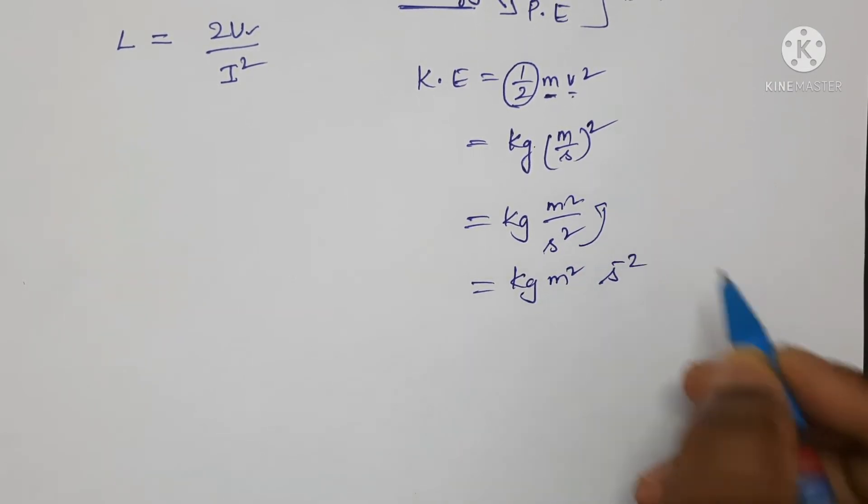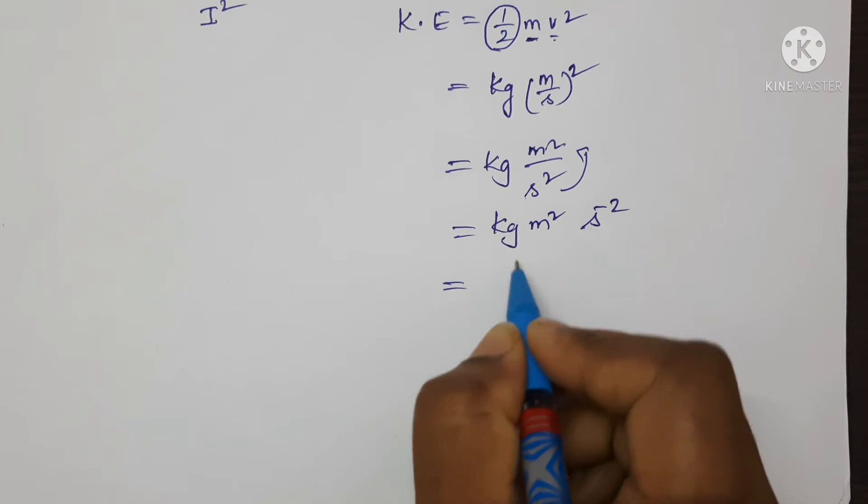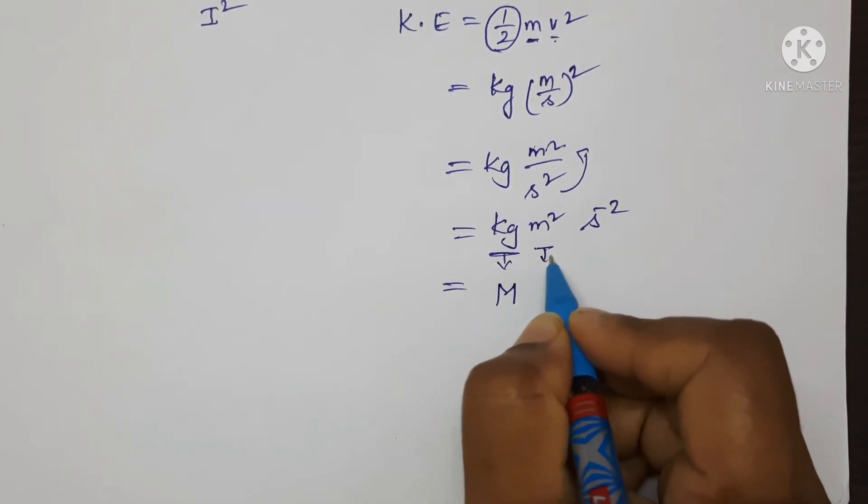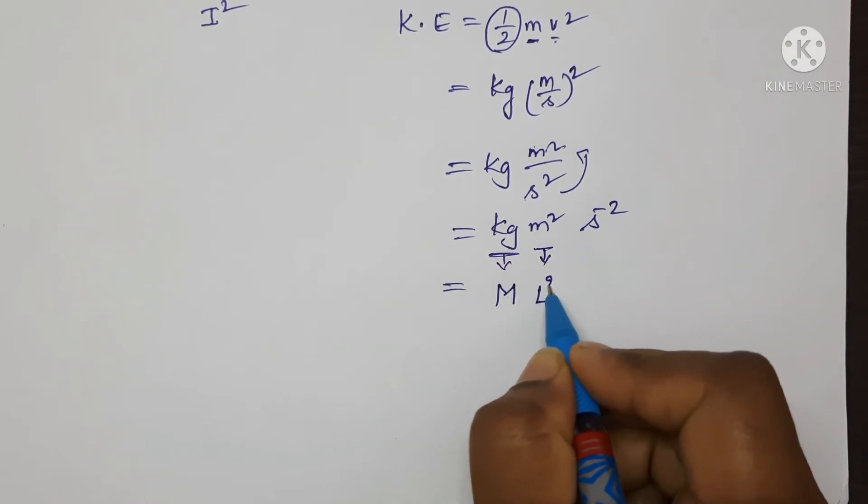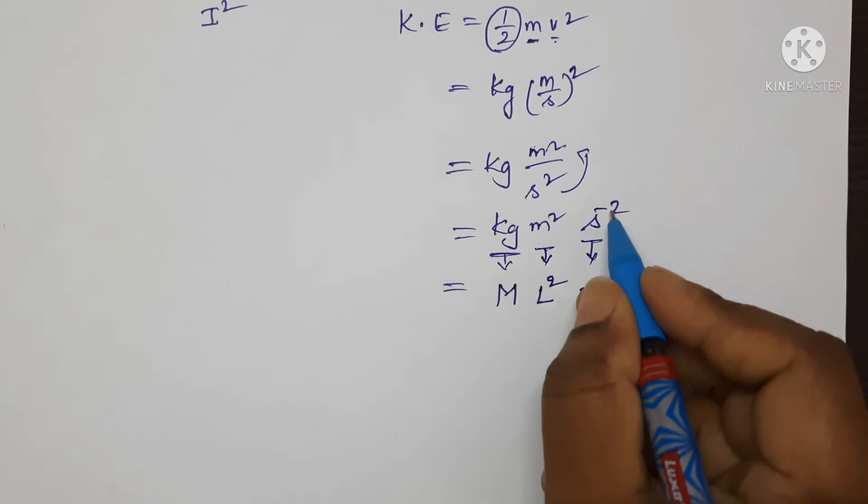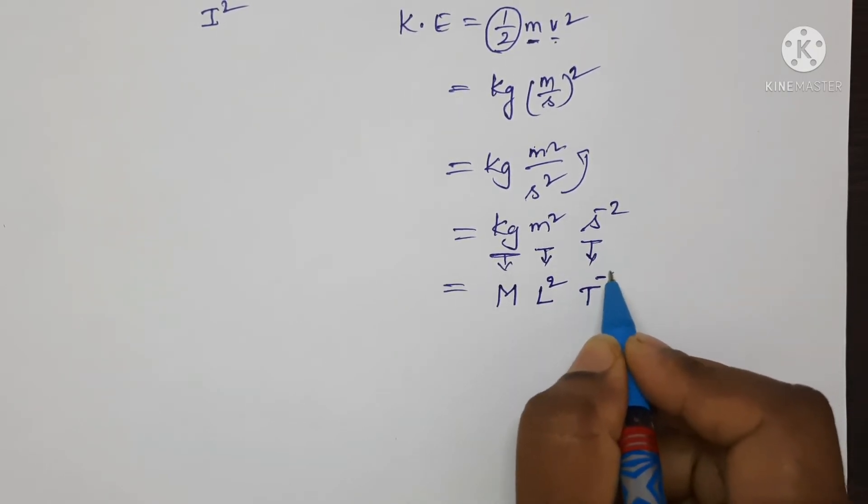Now write the dimensional formula. Kilogram is expressed as capital M, meter is expressed as capital L. Since there's a square, L squared. Second is expressed as capital T, and s to the power of minus 2 becomes T power minus 2. This is the dimensional formula for kinetic energy.